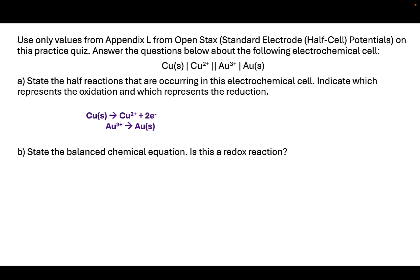For the gold to go from gold 3+ to solid gold, it needs to gain three electrons. We need to put those into the reactant side. These are our half reactions. From this we can see that copper is being oxidized—it's losing electrons as it goes from copper to copper 2+—and gold is being reduced. It's gaining electrons as it's going from gold 3+ to gold with no charge at all.